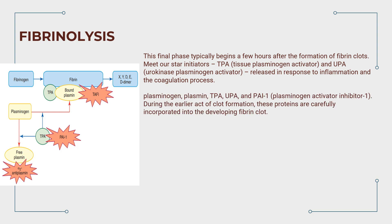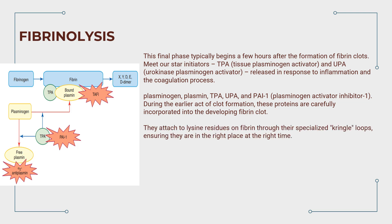The key cast members of fibrinolysis include plasminogen, plasmin, TPA, UPA, and PAI-1, plasminogen activator inhibitor-1. During the earlier act of clot formation, these proteins are carefully incorporated into the developing fibrin clot, attaching to lysine residues on fibrin through their specialized kringle loops, ensuring they are in the right place at the right time.